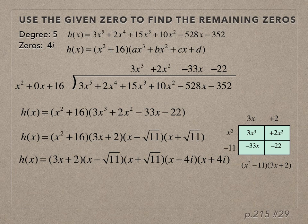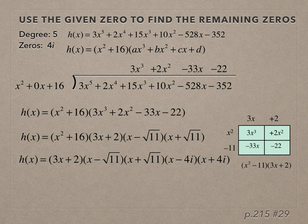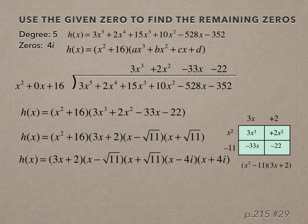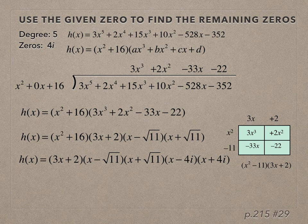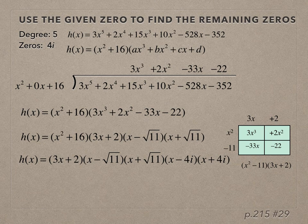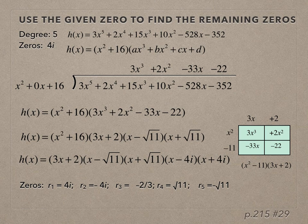I have a real zero, in fact it's rational, at -2/3. I have irrational zeros at √11 and -√11. And I have complex zeros at 4i and -4i. So the zeros—we know there are five of them for a fifth-degree polynomial—are here.